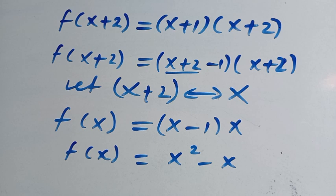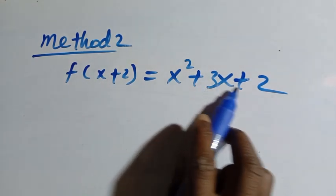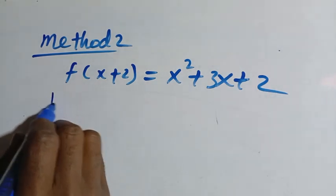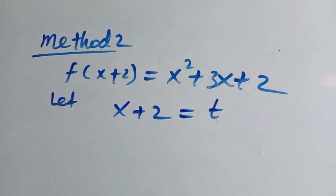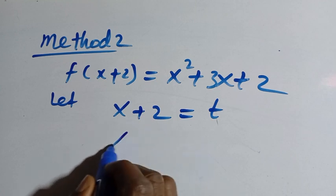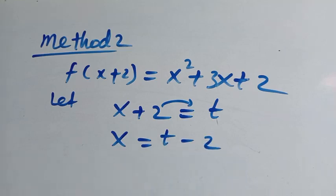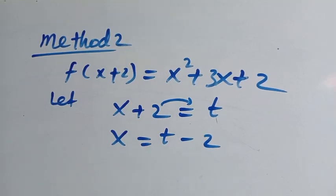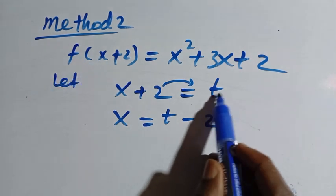And let's see the second method of solving these functional equations. For the second method, we have f of x plus 2 equals x squared plus 3x plus 2. From here, we are going to let x plus 2, which is the domain, equal to t. Then let's make x the subject of the formula. We have x equals t minus 2. Then from the given problem, f of x plus 2 becomes f of t, and x squared is now t minus 2.